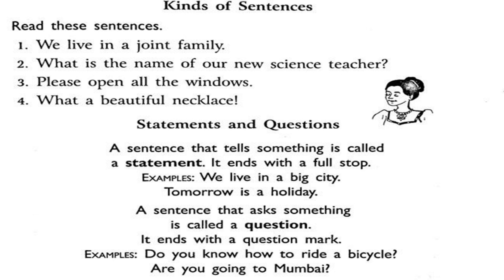The first sentence is: 'We live in a joint family.' Second: 'What is the name of our new science teacher?' Third: 'Please open all the windows.' Fourth: 'What a beautiful necklace.' Do you notice any kind of difference in the structure of these sentences?